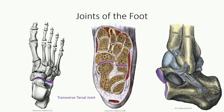The transverse tarsal joint is a compound joint that includes the talonavicular joint in conjunction with the calcaneocuboid joint, tending to move as a functional unit. It divides the foot into a midfoot and hindfoot region and permits rotation within the coronal plane, contributing further to inversion and eversion. Movement at the tarsometatarsal joints is limited, but creates a boundary distinguishing the midfoot from the forefoot region.